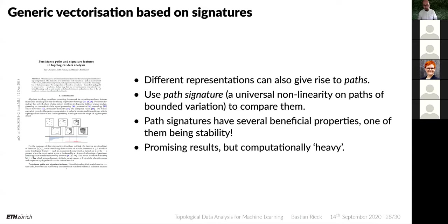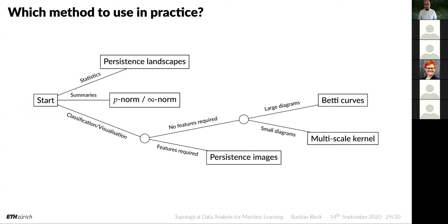Let me end with a simple decision guide for which method to use in practice. If you're interested in statistics, just do persistence landscapes — that's what they were invented for, and in particular they allow hypothesis testing. If you just want a quick summary look into your data, use the norms of the persistence diagrams.